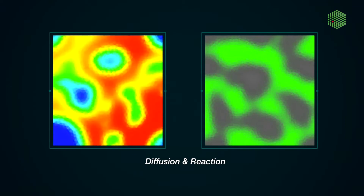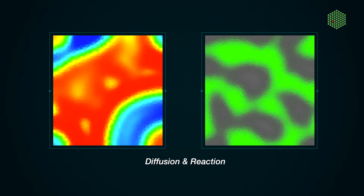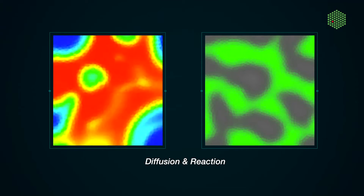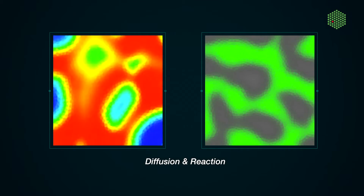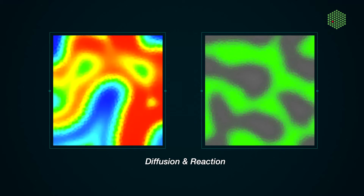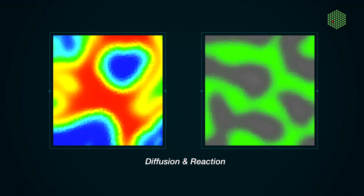Generally, diffusion smooths out the peaks of concentration of a substance. Turing realized that if two substances reacted and diffused in just the right way, spatially periodic patterns would emerge.